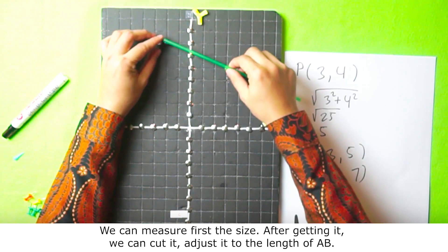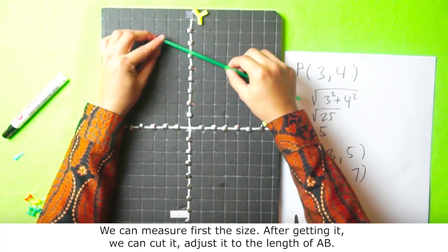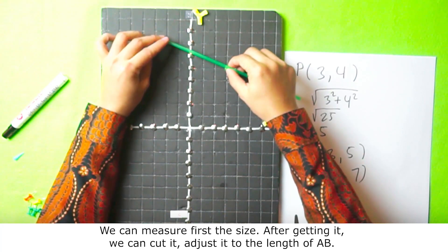We can measure first the size. After getting it, we can cut it. Adjust it to the length of AB.